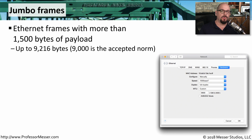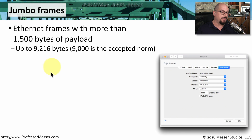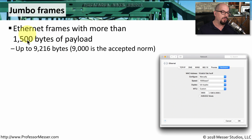A normal ethernet frame can support 1,500 bytes of a payload. But if we're sending and receiving so much traffic to a storage area network, we might want to increase the size of these frames. A way to do this is to enable jumbo frames on your network. This would allow you to transfer 9,216 bytes of data within a single ethernet frame, although it's common to configure 9,000 so it's more compatible with the 1,500 byte payload. Either way, you're increasing the amount of efficiency by six times because you can fit so much more data within a single ethernet frame.